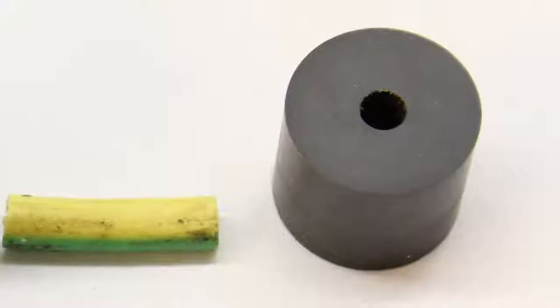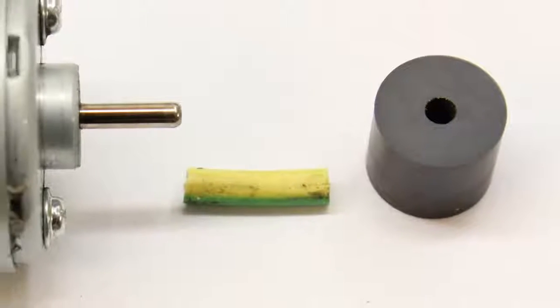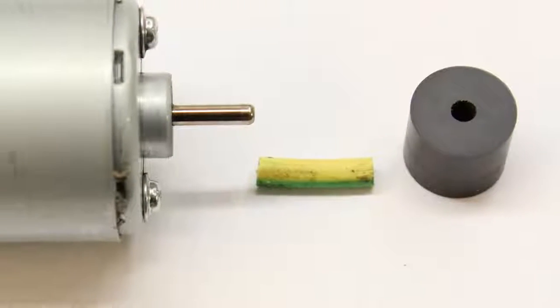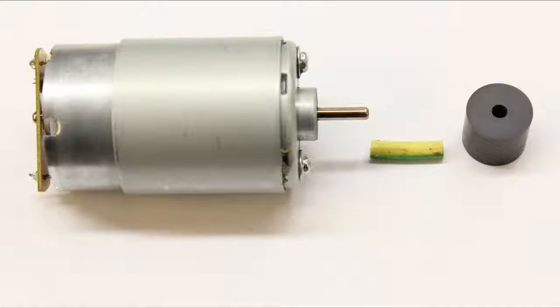The second gear of the transmission is a rubber roll from an old printer. It gets press fit on the shaft of the motor. A short piece of the insulation of a cable is used to make it all fit tightly.